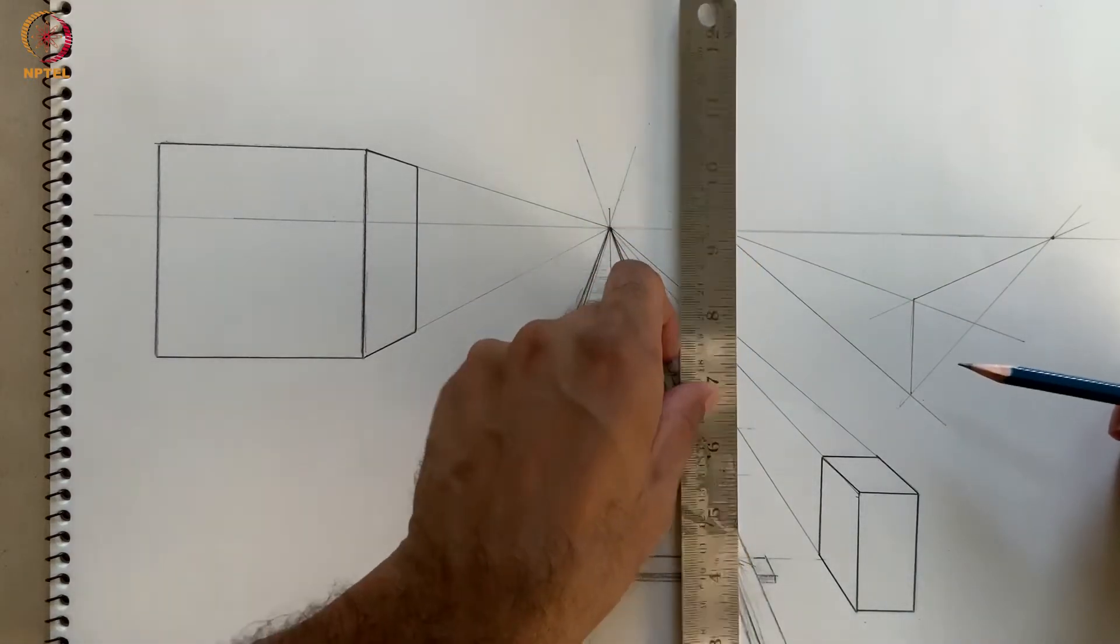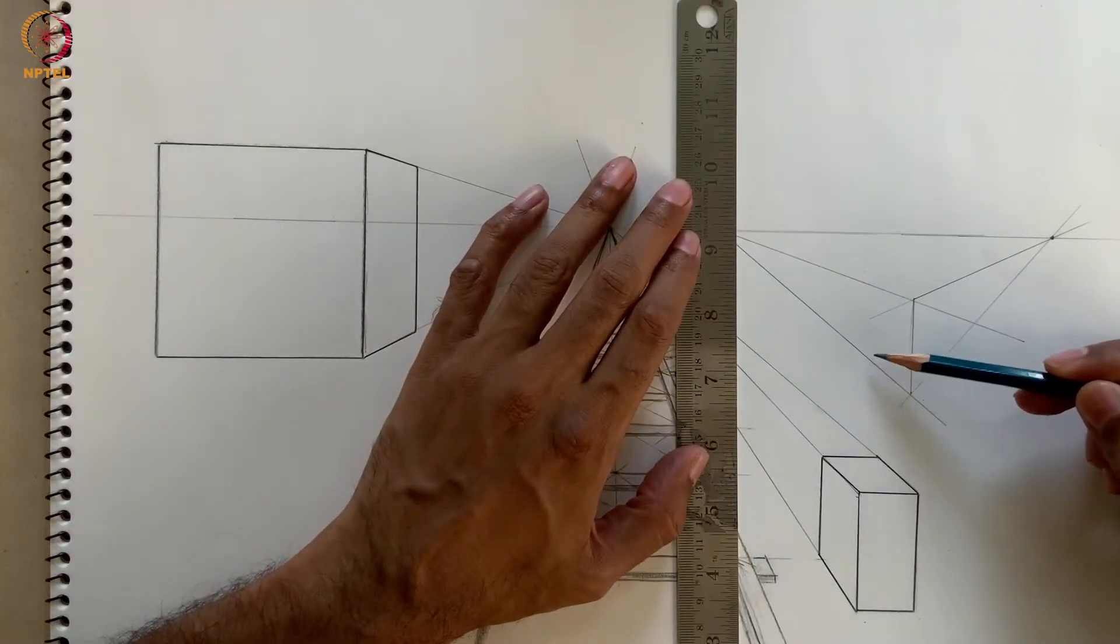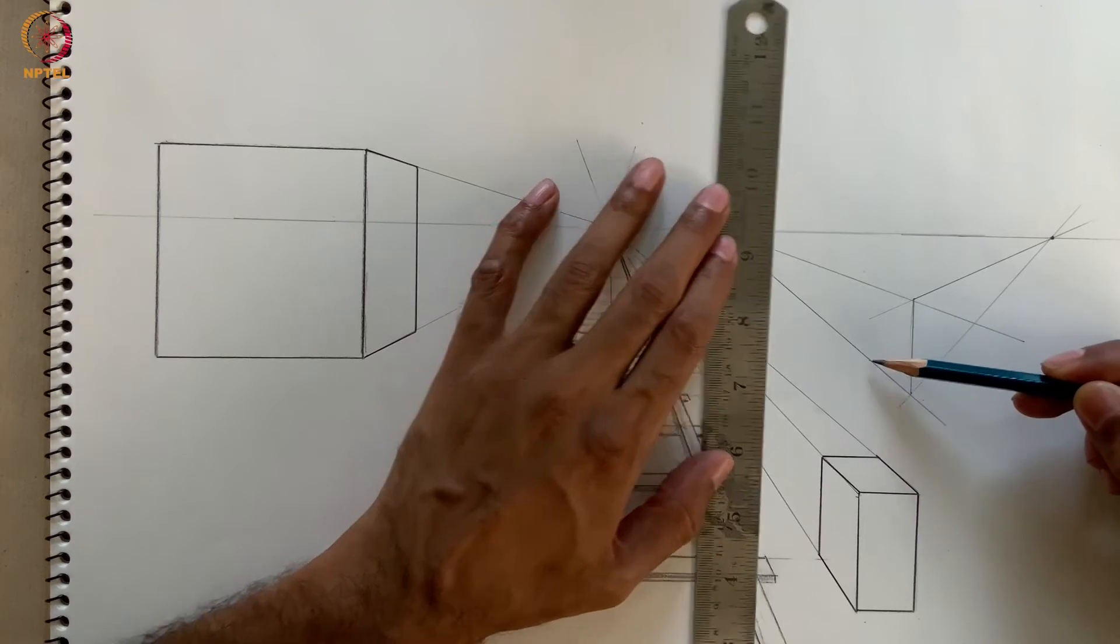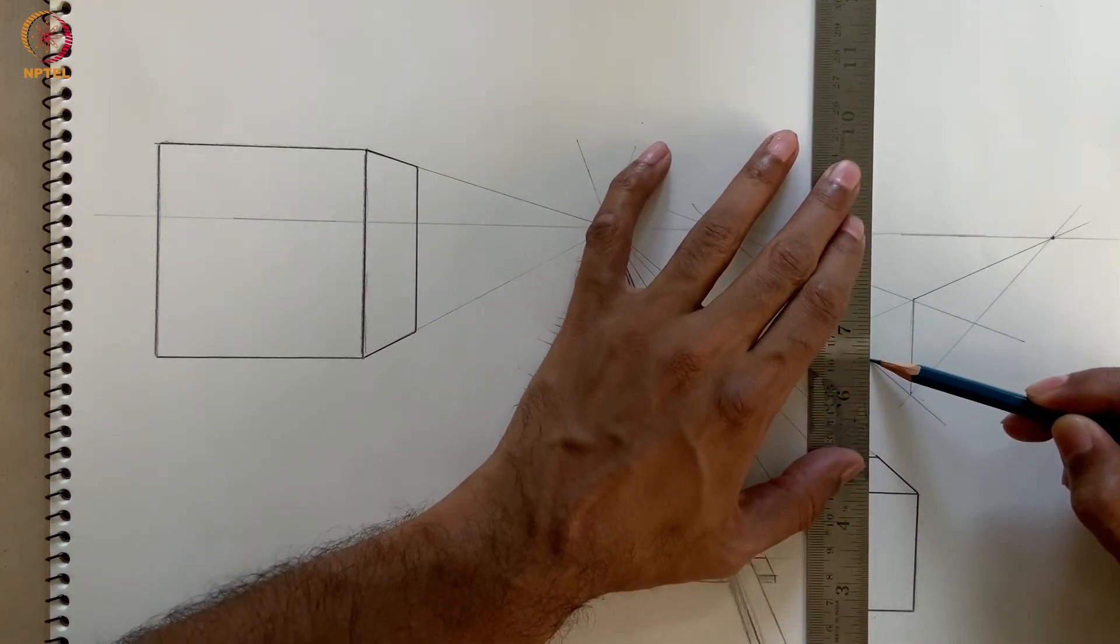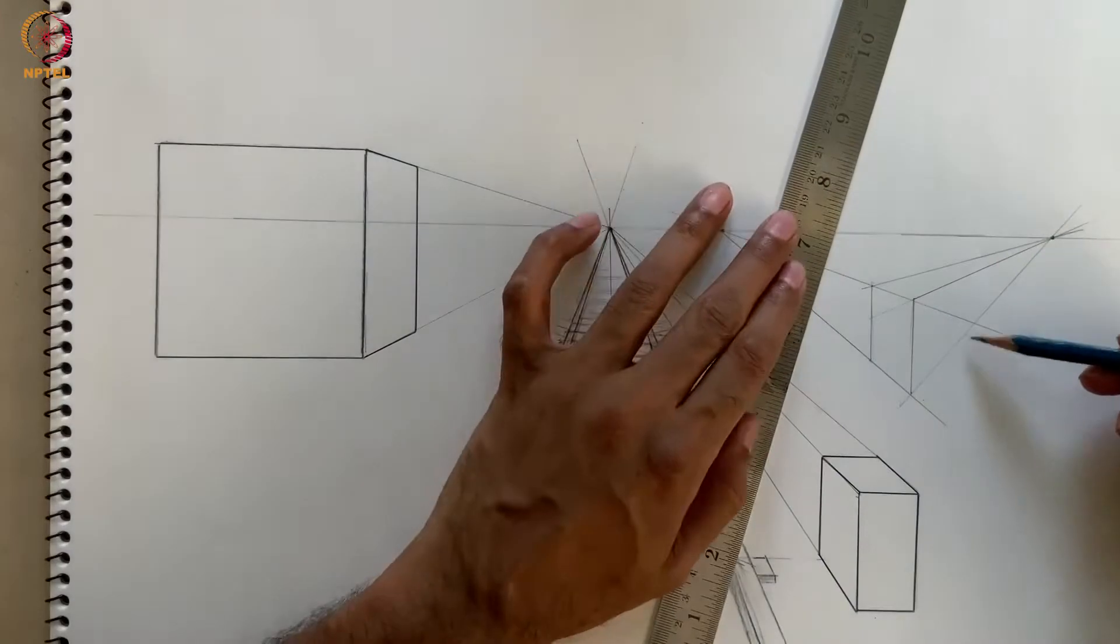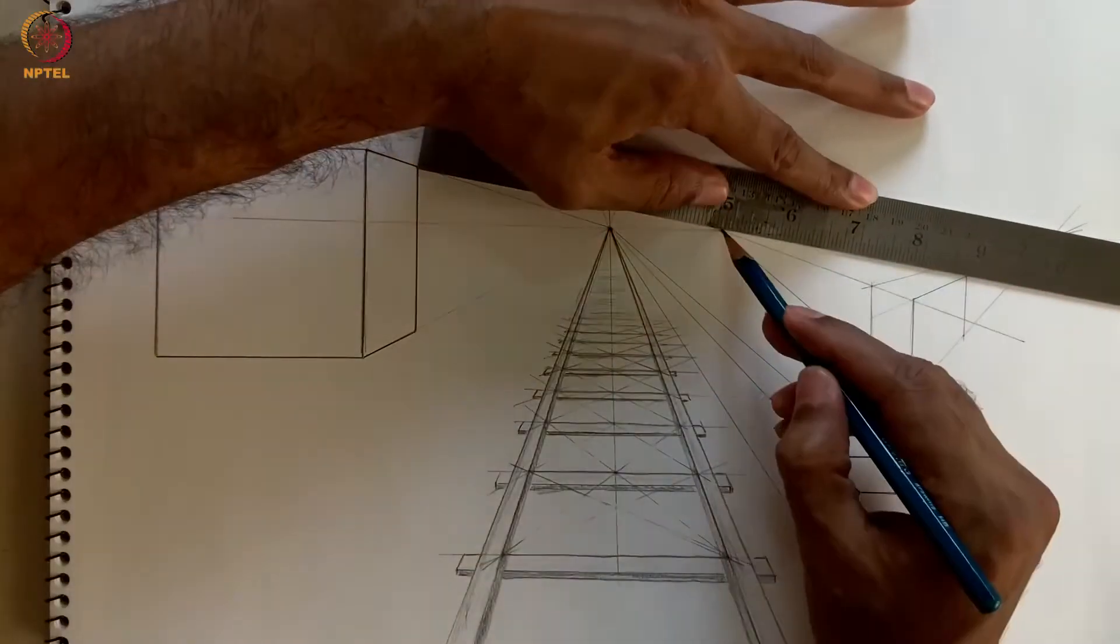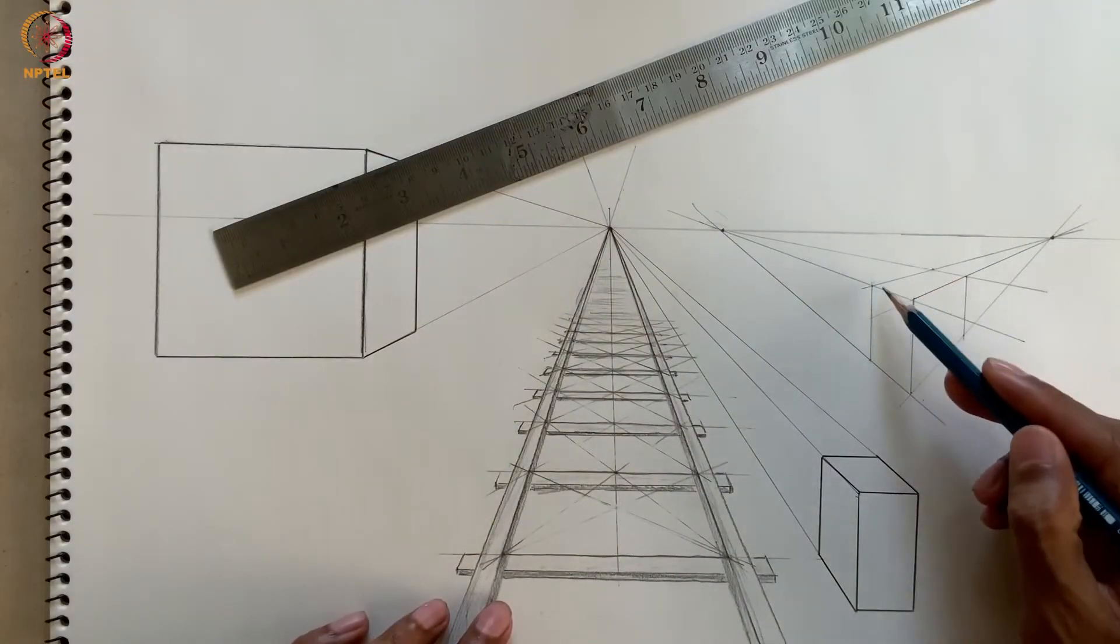Now we just need to decide where we want our box to end and draw vertical segments to mark those back edges of the box. And that's all there is to it.